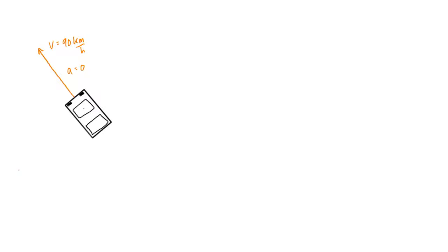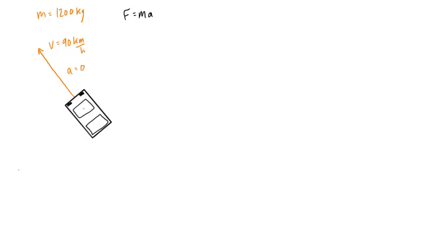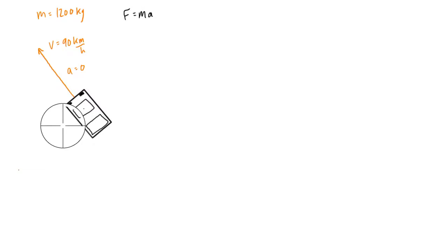Let's specify a mass for the car because we're going to come back to this later — let's say it's 1200 kilograms. When you start seeing masses identified in problems, we're really getting into the realm of kinetics, which all revolves around the formula F = ma. But in this case, if acceleration equals zero, then that's telling us that the net force acting on the car is zero.